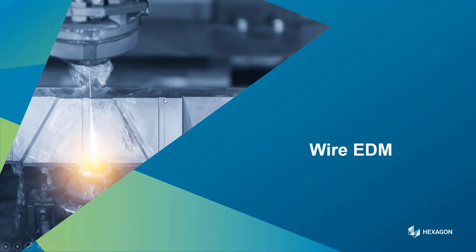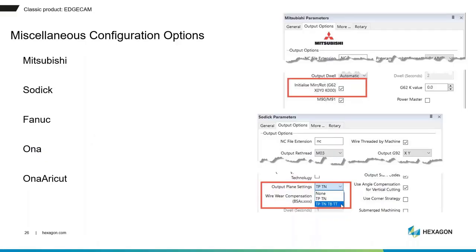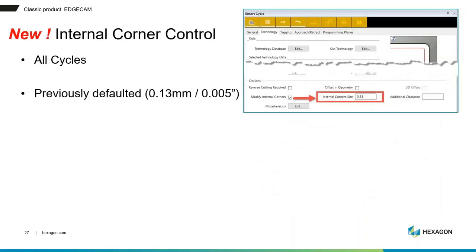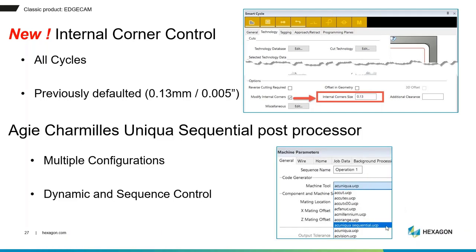Wire EDM enhancements: the machine parameters for five major controllers have been updated, with the Sodic wire wear compensation post-processor receiving significant additions. Internal corner parameters — previously hard-coded, causing problems with very small parts by generating unwanted twist radii — are now user-controllable in 2023.1. Additionally, the Agiecut Meal post-processor now supports both sequential and dynamic permutations.